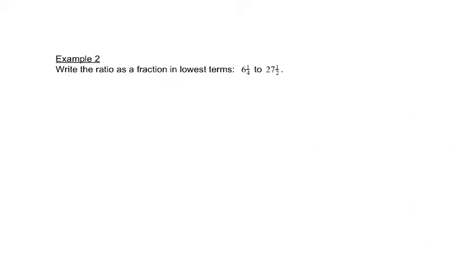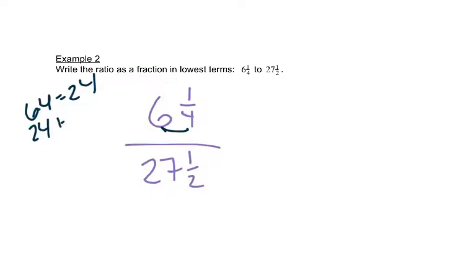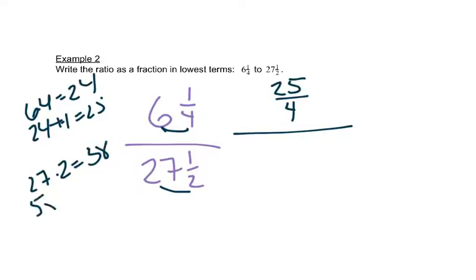So this is write the ratio as a fraction in lowest terms. We have 6 and 1 fourth over 27 and 1 half. Let's start by rewriting those fractions as improper fractions. So we'll take 6 times 4 is 24 and then we'll add 1 and we get 25. So this is really 25 over 4 for the top fraction. We'll do the same thing on the bottom. 27 times 2 is 58 and 58 plus 1 is 59. So the bottom fraction is 59 over 2.